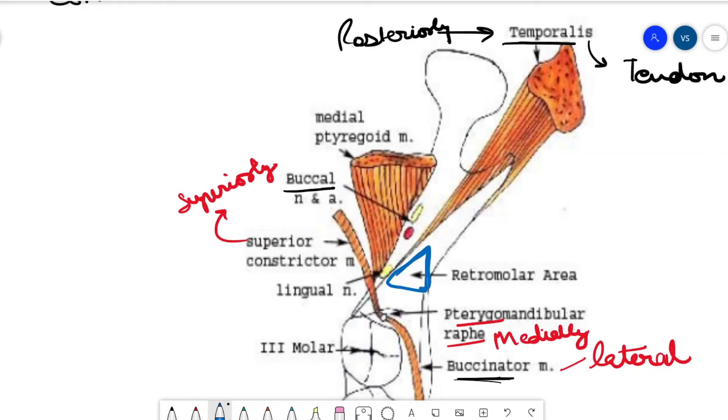Now if the question comes, the muscles which form the retromolar pad, these are the muscles: tendon of temporalis posteriorly, superior constrictor muscle, pterygomandibular raphe, and the buccinator muscle. And it's a pear-shaped area.